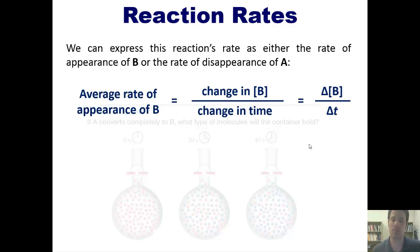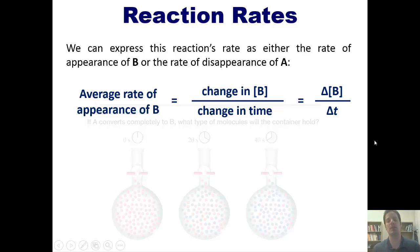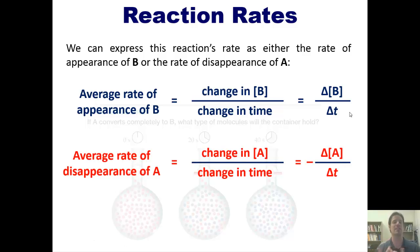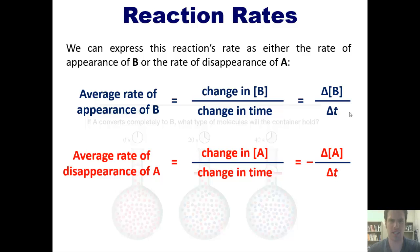The average rate of appearance of B equals the change in the concentration of B over time, which we re-express as delta [B] over delta T. Similarly, the average rate of disappearance of A is the change in concentration of A over time, or negative delta [A] over delta T.